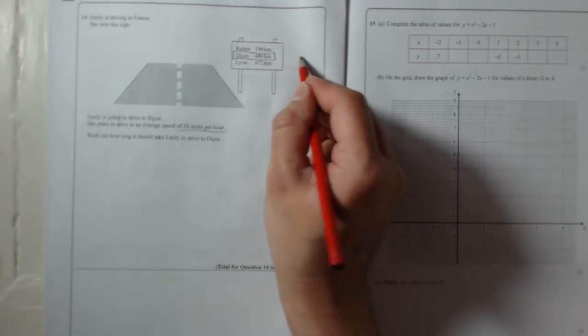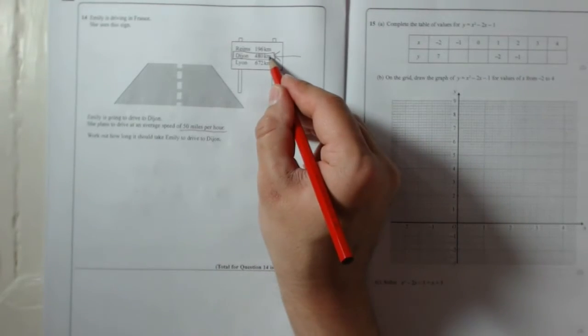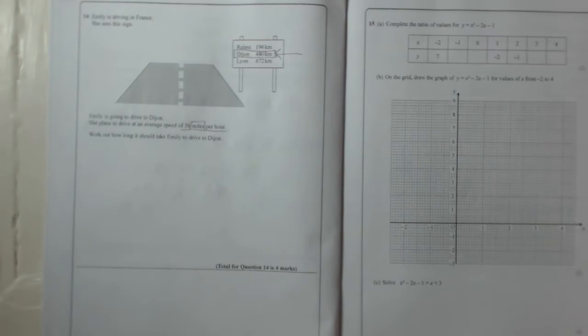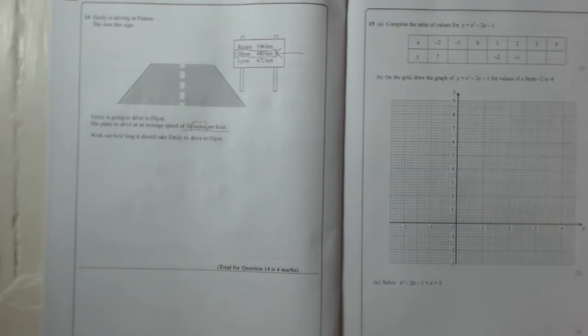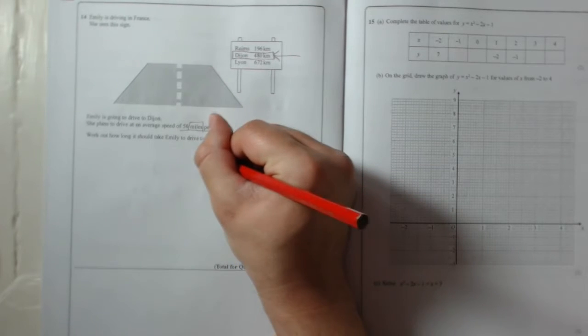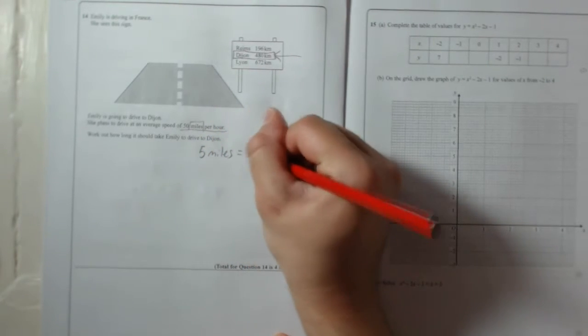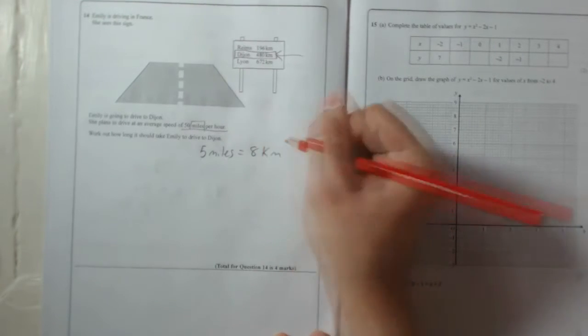Now read the question carefully. They are given in kilometres and then we've got miles per hour. Now something that you should all remember - don't forget this after I've told you - five miles, this is just something that everyone should know, five miles is roughly equal to eight kilometres.